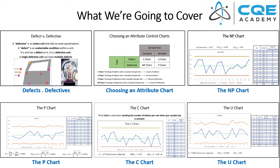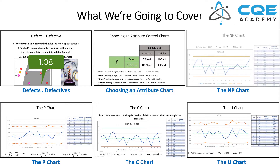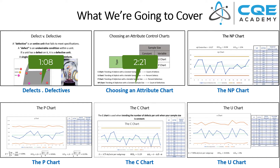Let's check out today's agenda. The first topic we're going to touch on is the distinction between defects and defectives. This is a really important distinction because it affects which control charts we should be using within our process. Then we're going to use that to talk about choosing the right control chart. Depending on whether you're using defects or defectives and how your sample size might change or stay constant, that affects which control chart you should be using. We'll then walk through the four most common control charts: the NP chart, the P chart, the C chart, and the U chart.